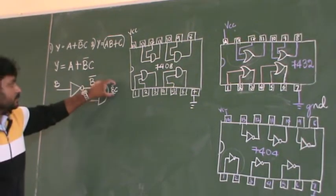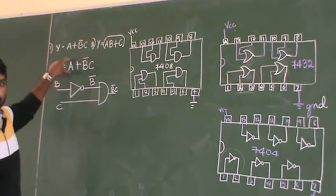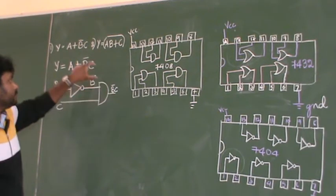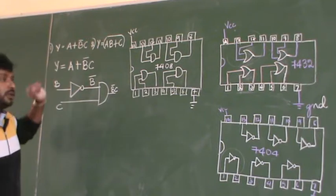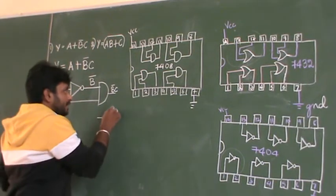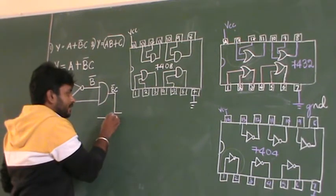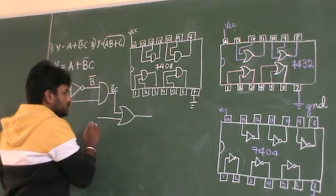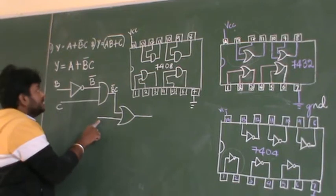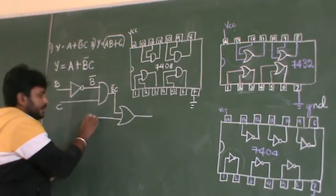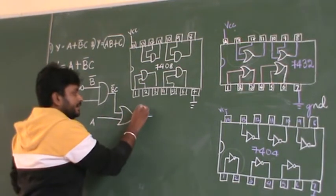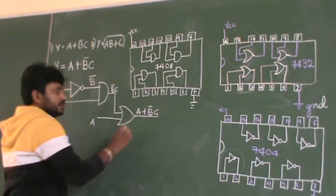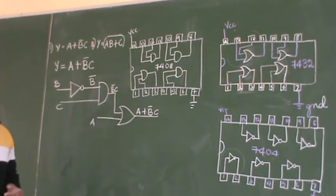Now this term has to be added with A. Whatever answer you are getting, that term you have to add up with A. If you want to add it, then you have to use an OR gate. So the other input we give here is A. Here you will be reading A plus D̄ into C as the final output.